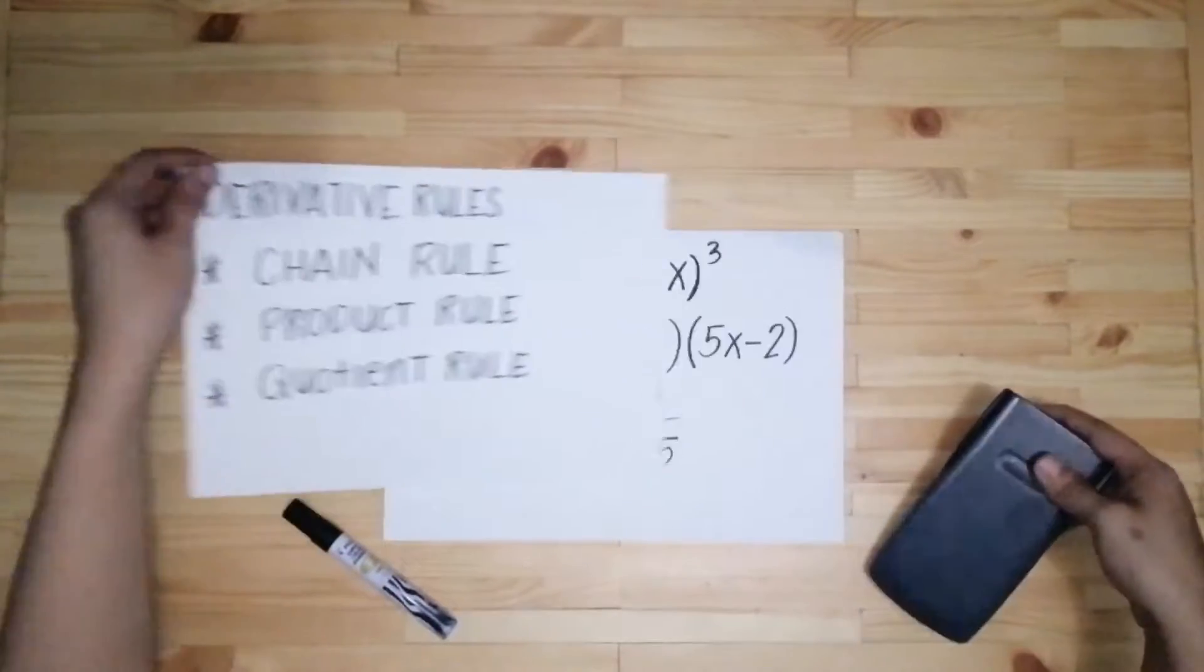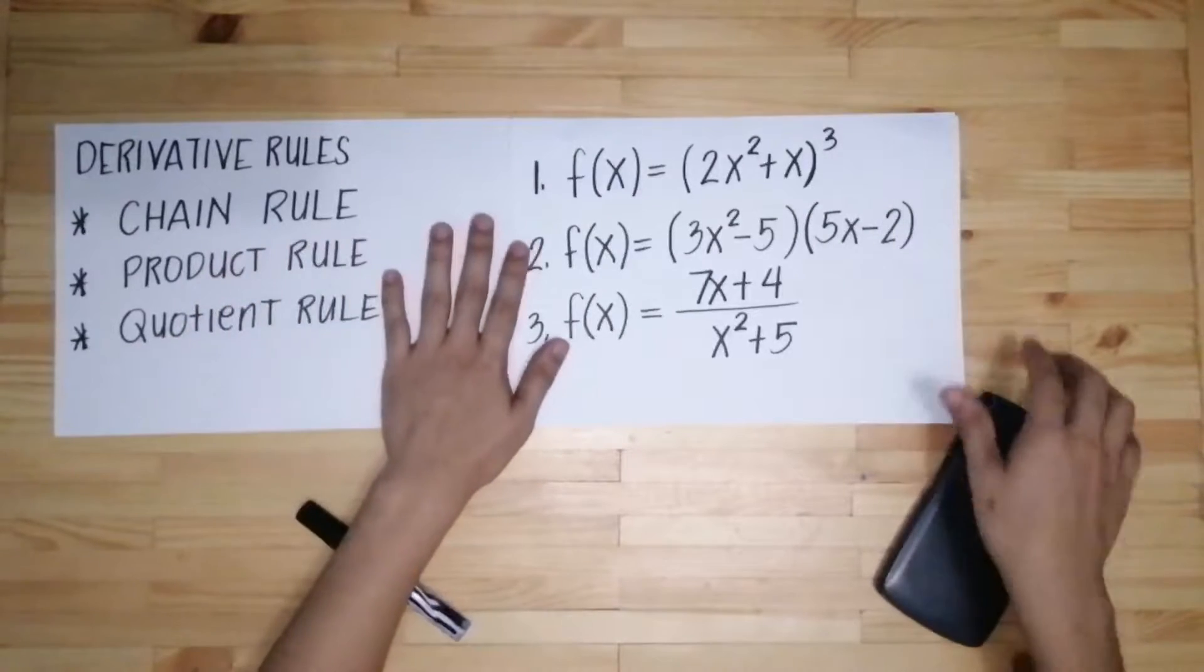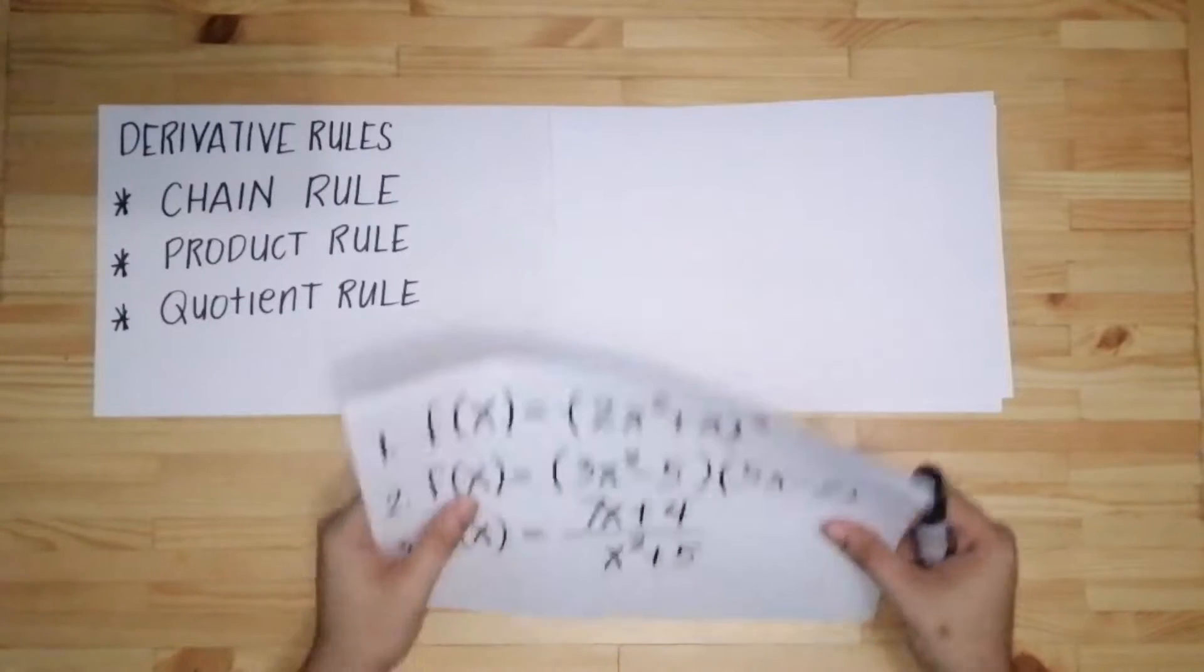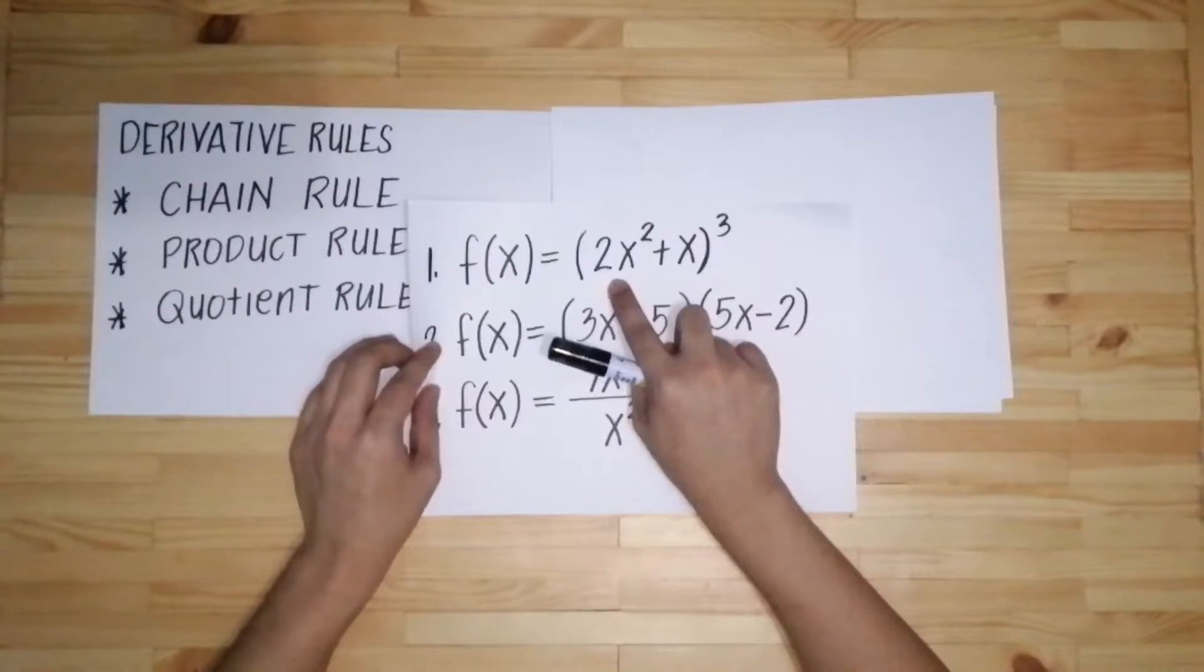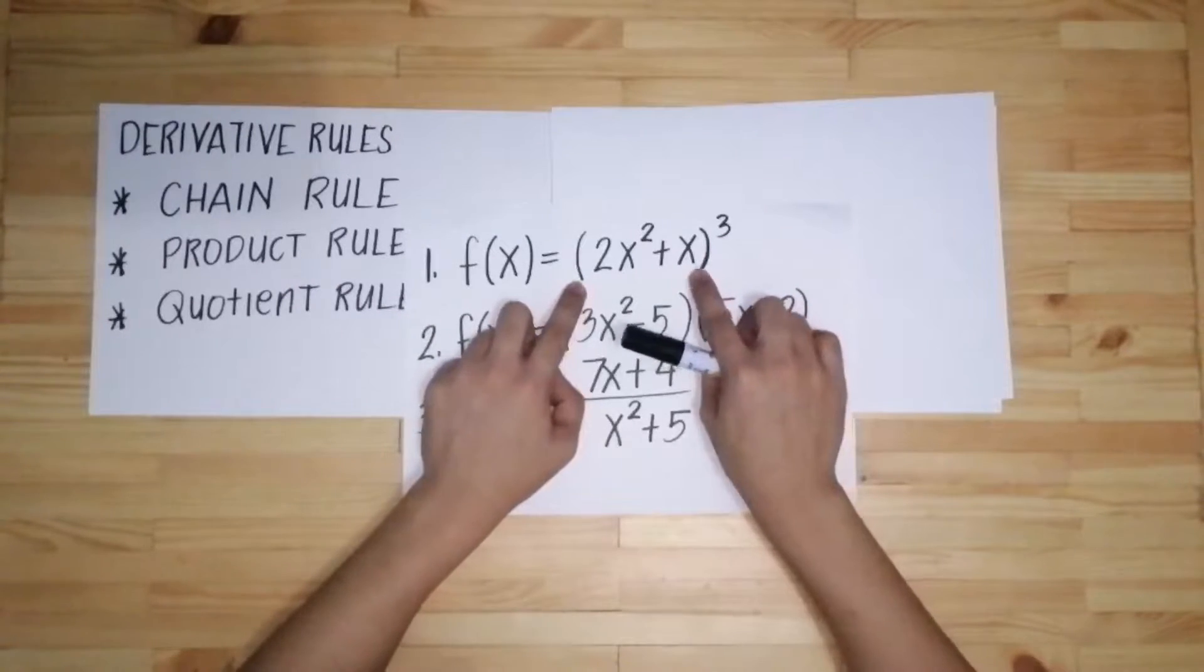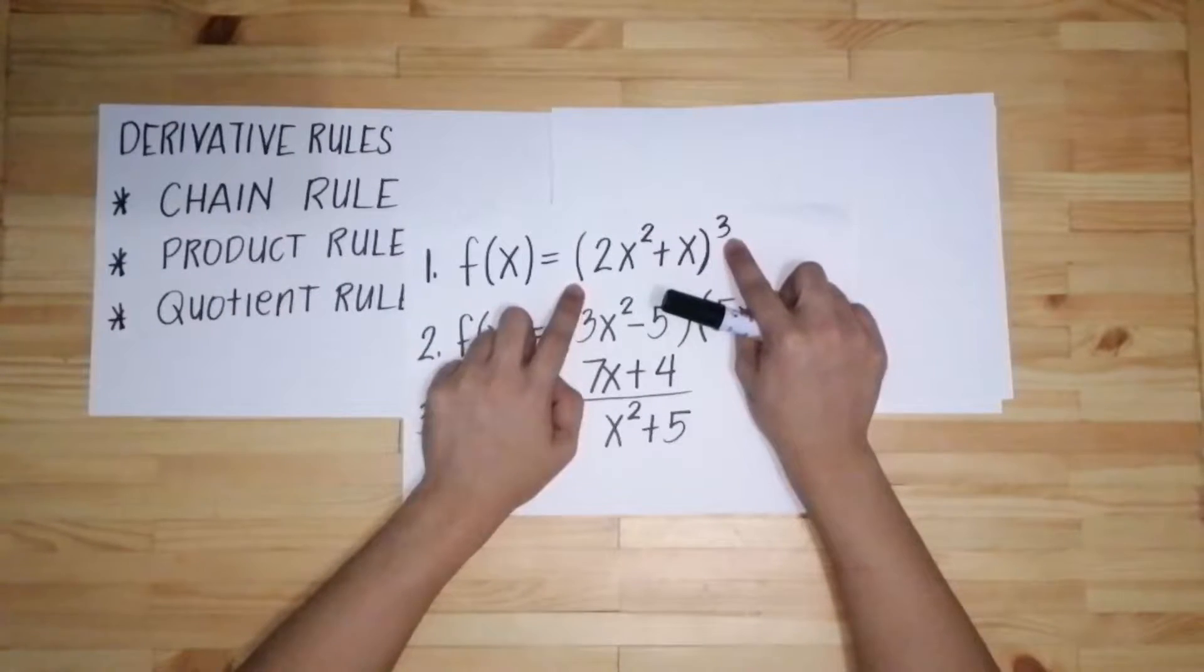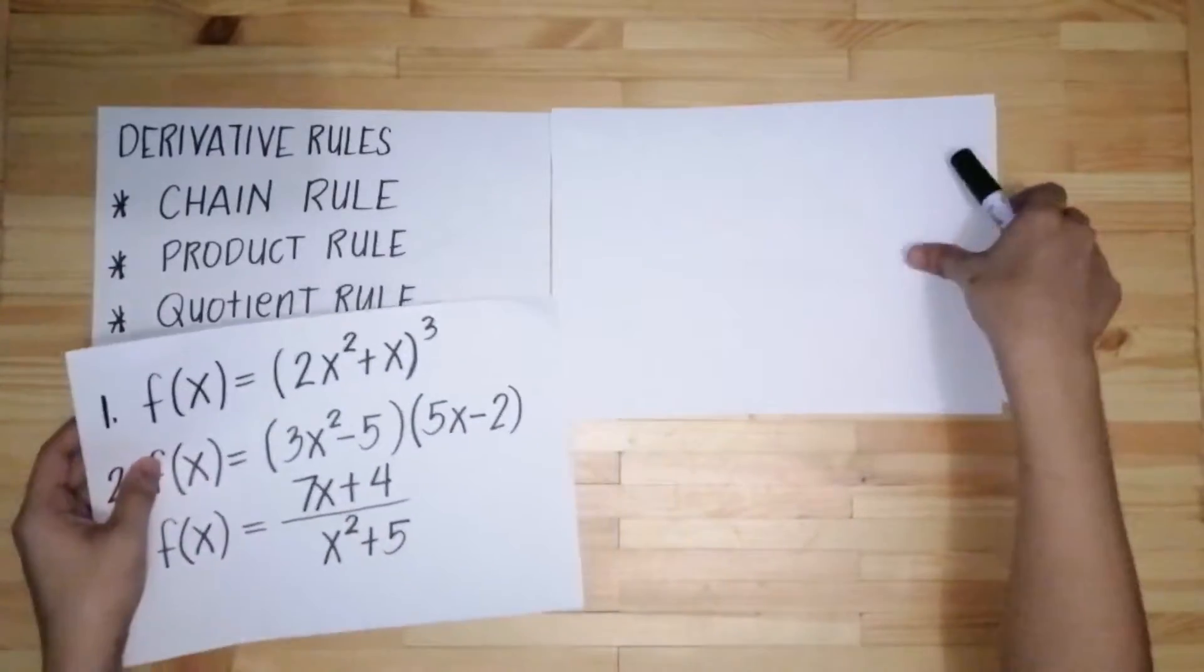So I have here three examples to show the process of getting the derivative using the three rules. In number one, let's have this. We have f(x) equals 2x squared, the quantity of 2x squared plus x raised to 3. Kapag meron kayo nakitang parenthesis na merong binomial o trinomial sa loob or polynomial at merong exponent dito sa labas ng parenthesis, you are going to use chain rule to get the derivative of this function. So paano ba ginagawa ang chain rule? Madali lang yan.